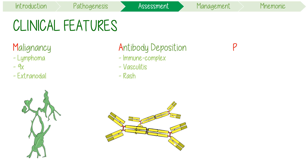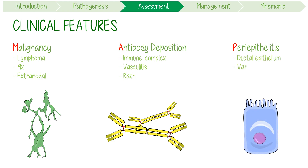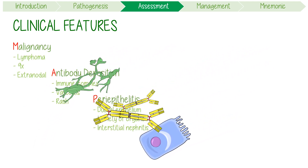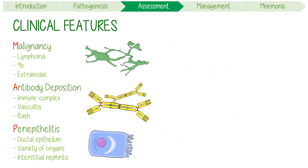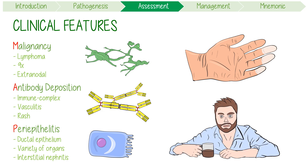Finally, P stands for periepithelialitis. This describes the immune response in ductal epithelial structures within a variety of organs like the kidney, causing things like interstitial nephritis. Don't forget that other nonspecific symptoms like Raynaud phenomenon and fatigue are also really common too.